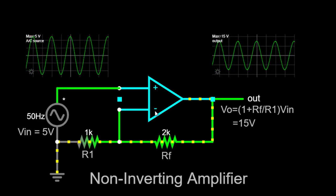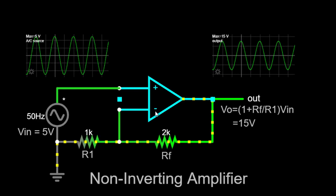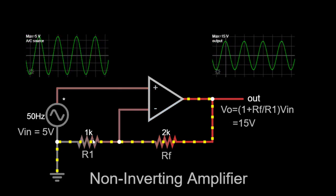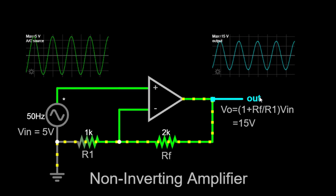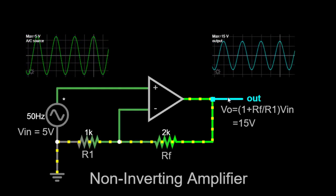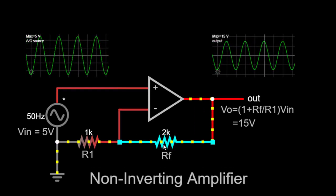The inverting terminal, marked with a minus sign, is connected to the ground or a virtual ground. The output of the op-amp is taken from the junction of a resistor connected to the inverting terminal and a feedback resistor.